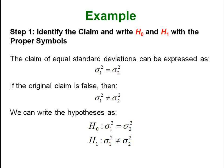Step one: identify the claims. The claim is that the standard deviations are equal, so the opposite is that they are not equal. Our H₀ is that variance-sub-1 equals variance-sub-2 and H₁ is that they are not equal. Note that even though the claim was about standard deviations, we are testing for variances — you always test variances. Standard deviations are a biased measure whereas variances are unbiased, so it is better to work with variances.